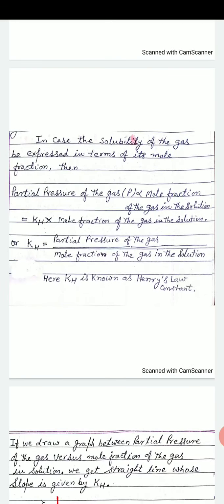In case the solubility of the gas is expressed in terms of its mole fraction, then partial pressure of the gas (P) is directly proportional to mole fraction of the gas in the solution. Or K is equal to partial pressure of the gas divided by mole fraction of the gas in the solution. Here K is known as Henry's law constant.